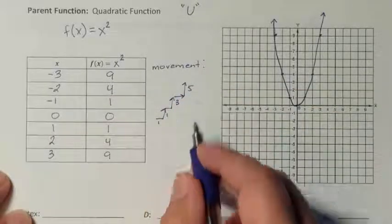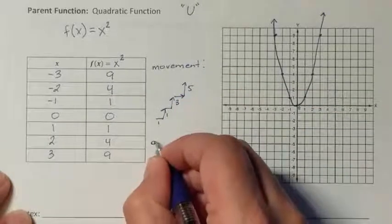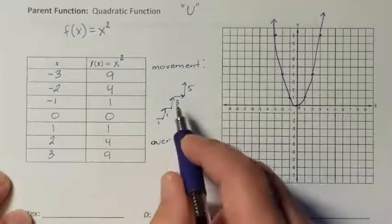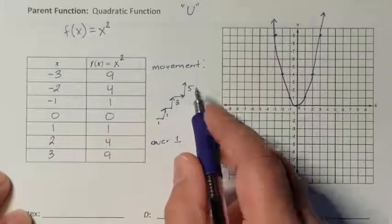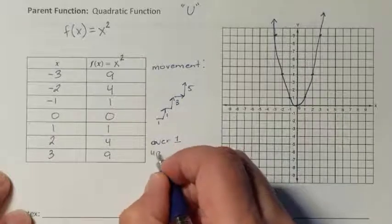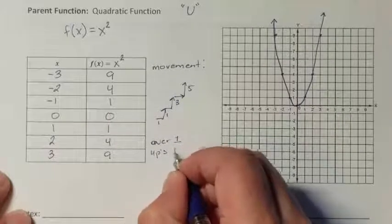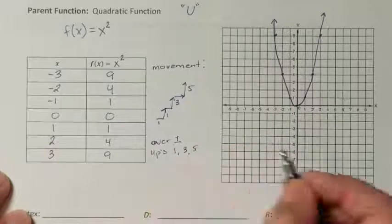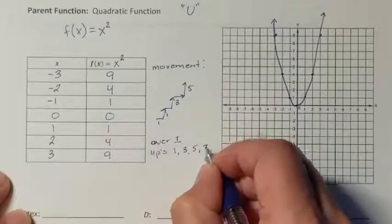I notice my movements are always going to be over 1, and my ups are 1, 3, 5. My ups are all odds. So my ups are 1, 3, 5. The next up would have been 7.